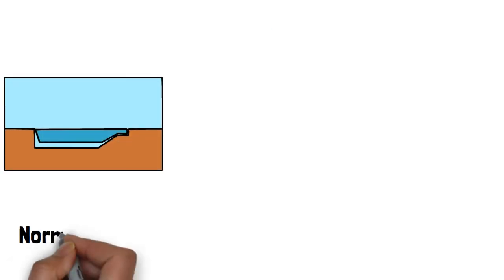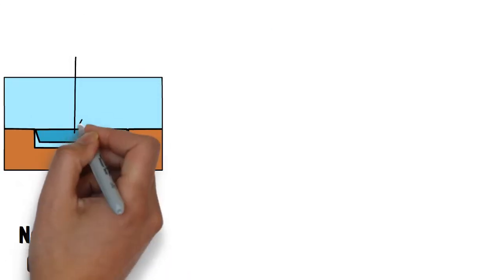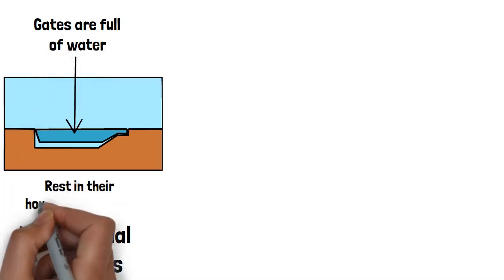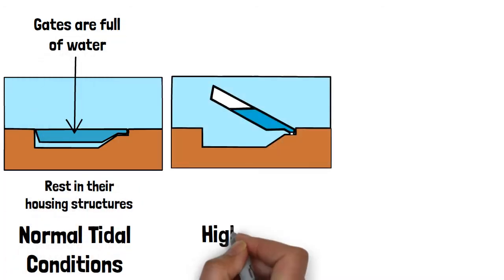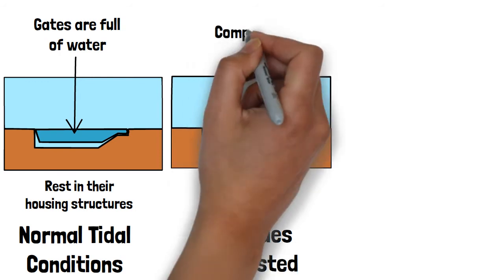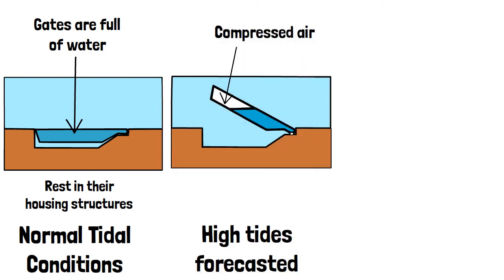The way the system works is that in normal tidal conditions, the gates are full of water, which allows them to rest in their housing structures. Once high tides are forecasted, compressed air is moved into the gates,